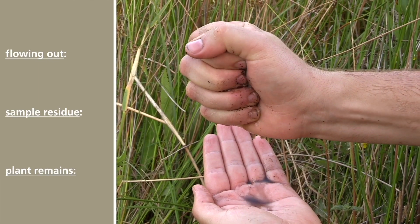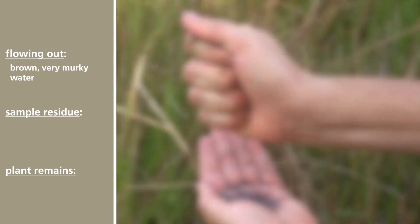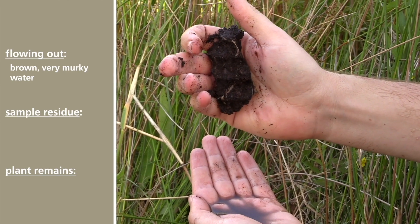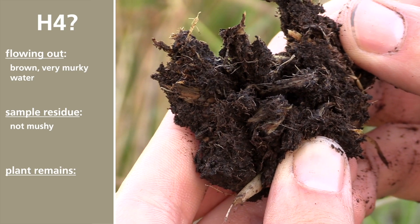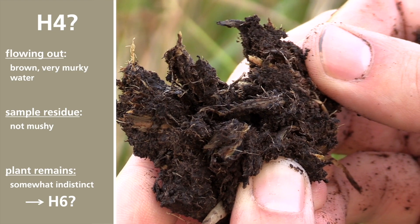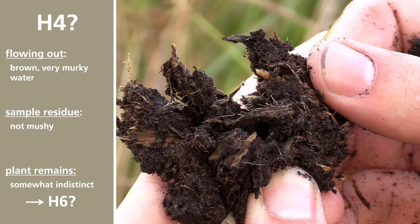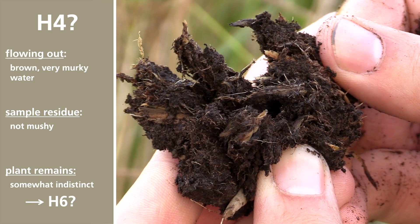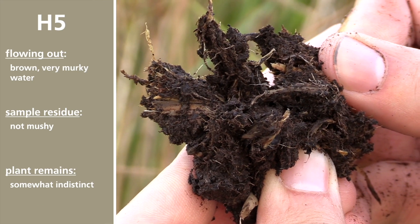Four: the most important criterion refers to the water or the peat that flows through the fingers. The consistency of the sample residue usually fits well with these properties. Based on these two attributes, this sample would be an H4. However, sometimes the characteristics of the plant remains can diverge. When this attribute diverges by at least two points, you can adjust by raising or lowering the final score by one point. In this case, we end up with an H5.